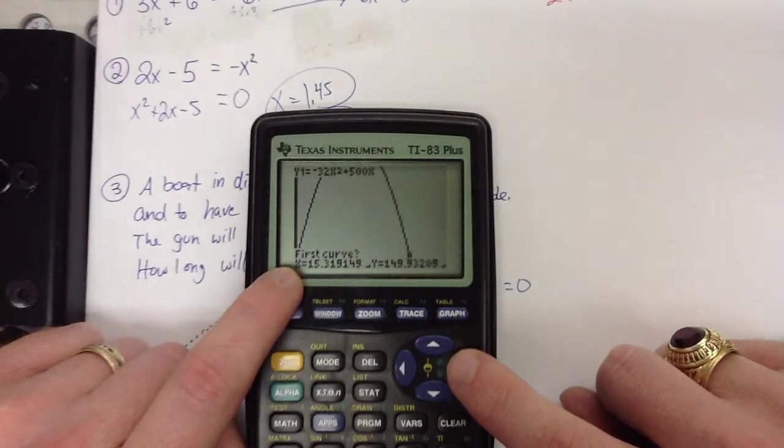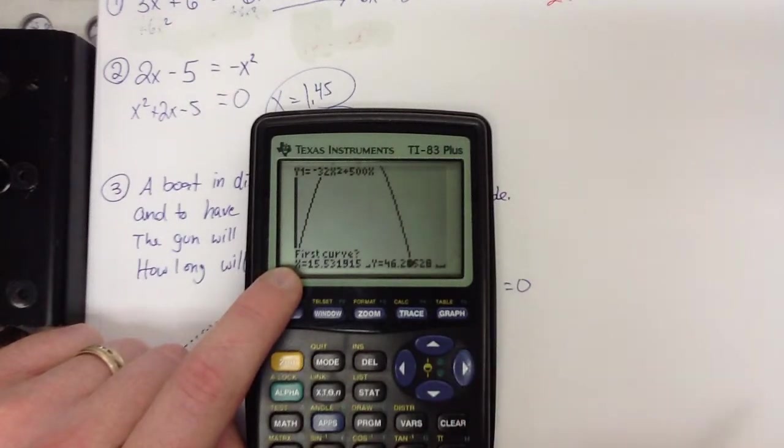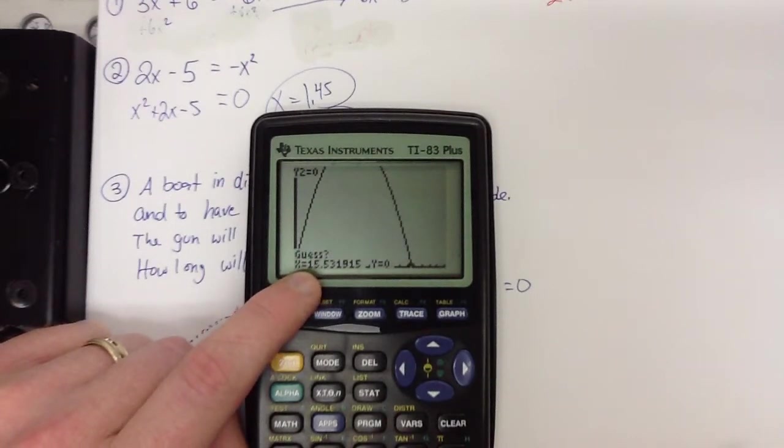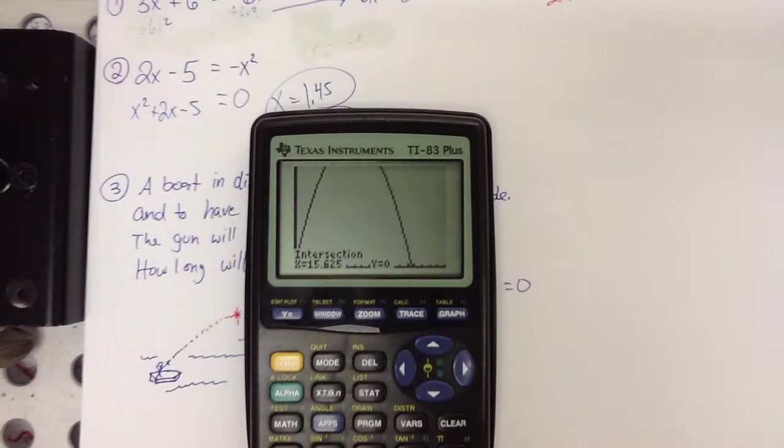All right. Now, remember, second trace intersect. We're identifying the first curve. Hit enter. Second curve is going to be the water or the ground. Hit enter. Tell it, yeah, sure. Guess. Hit enter again. 15.625 seconds.